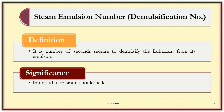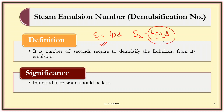Steam emulsion number is also known as demulsification number. It is the number of seconds an emulsion takes to demulsify. If one emulsion takes 40 seconds to demulsify and another takes 400 seconds, the first sample is better — the machine will remain idle for only 40 seconds while the lubricant demulsifies, then it will regain its position and start lubricating. With 400 seconds, the machine working may suffer for a much longer duration. So for a good lubricant, the steam emulsion number should be low — it should easily demulsify and the emulsion should not be stable.